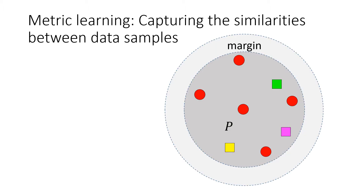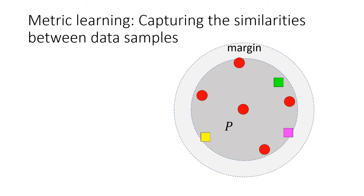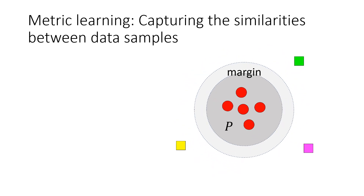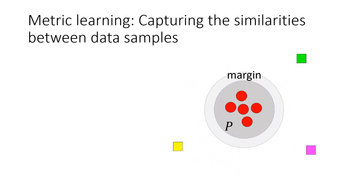Metric learning aims to learn an optimal Mahalanobis-based distance matrix, under which data samples from the same class are forced to be close to each other, and those from different classes are pushed far away.